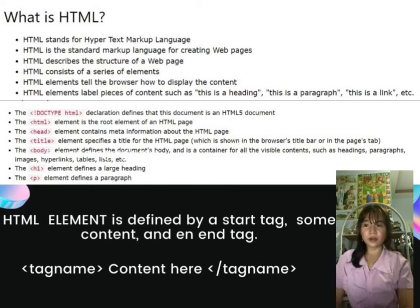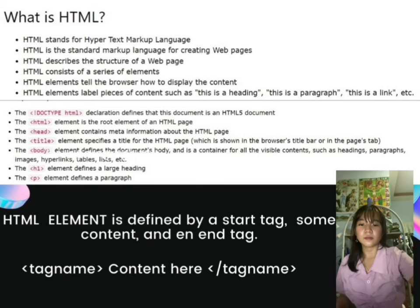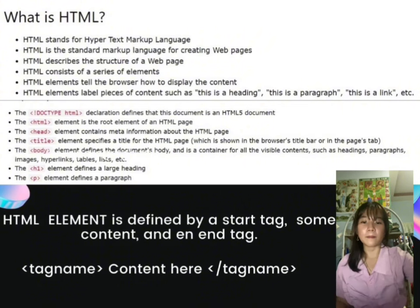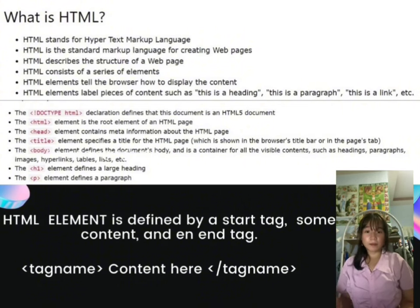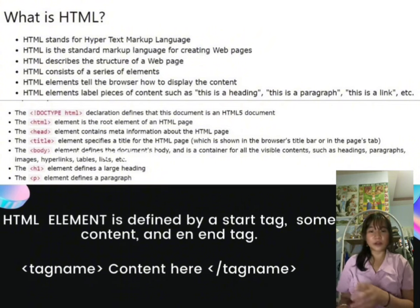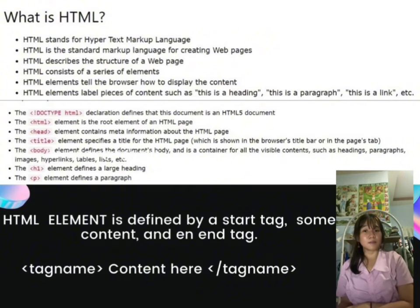There is also the paragraph element. The P element defines a paragraph. An HTML element is defined by a start tag, the content, and an end tag. For example, the start tag is less-than H1 greater-than, then the content is placed in between, and after that comes the end tag which is less-than forward-slash H1 greater-than.